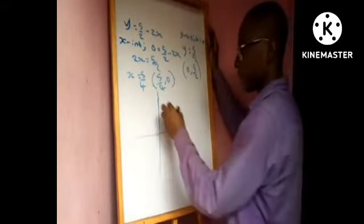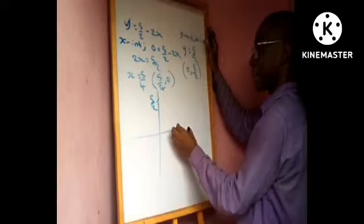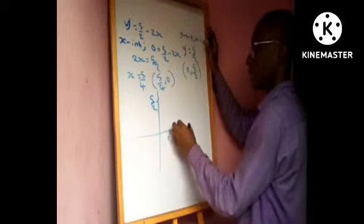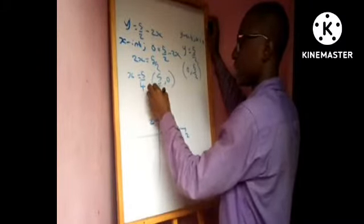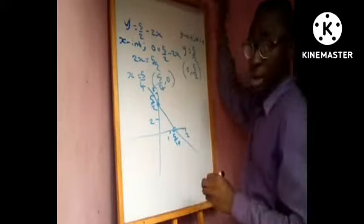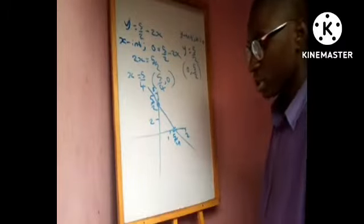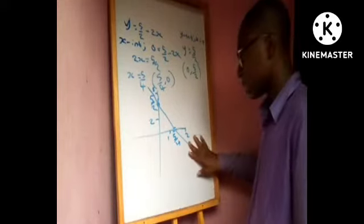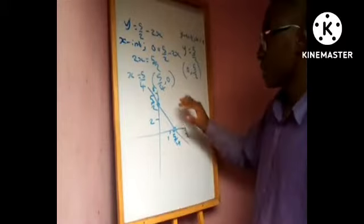We are going to use these intercepts to sketch the graph. Taking 5/2 on the y-axis — assume that point here — and 5/4 on the x-axis — which is between 1 and 2. We draw a straight line connecting these two intercepts, and that gives us the line of the equation. That's how to sketch a graph using the equation. For more detail on sketching graphs, check the SS1 videos.